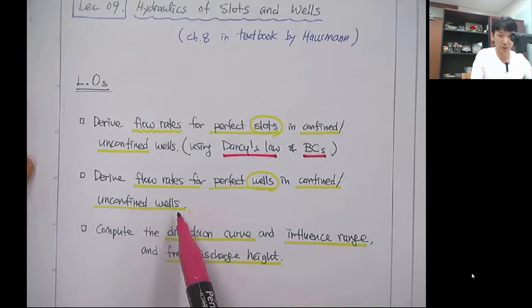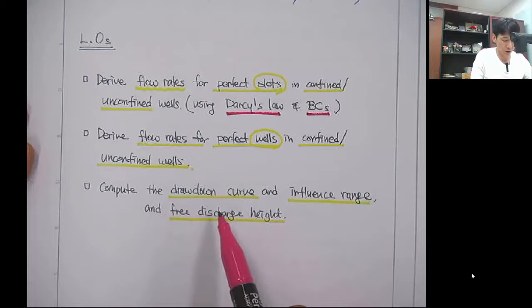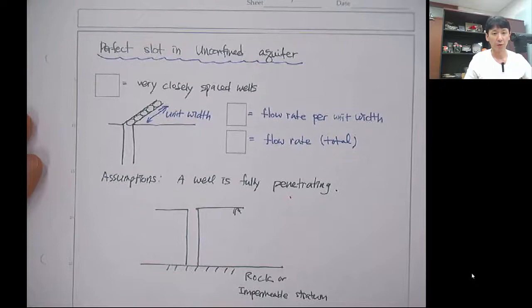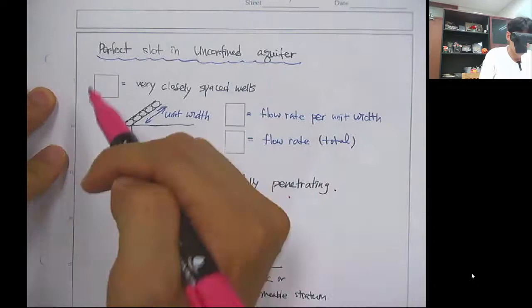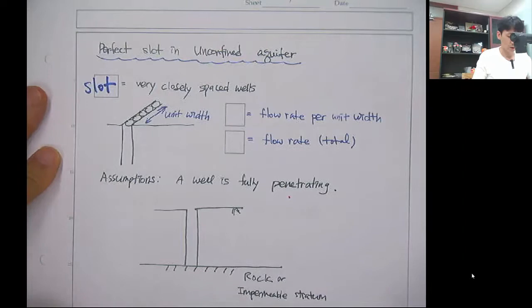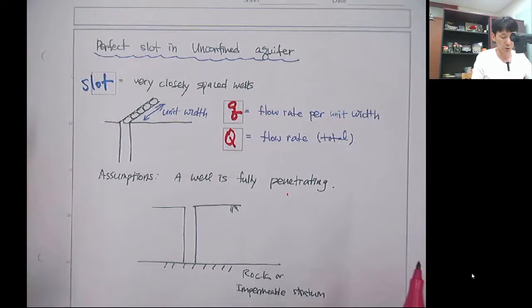The last objective is to derive the drawdown curve, influence range, and pre-discharge height. We will talk about the definition of the drawdown curve, influence range, and the definition of the pre-discharge height. Small q is defined as the flow rate per unit width, and capital Q is the total discharge rate.